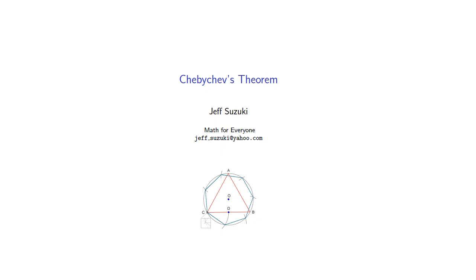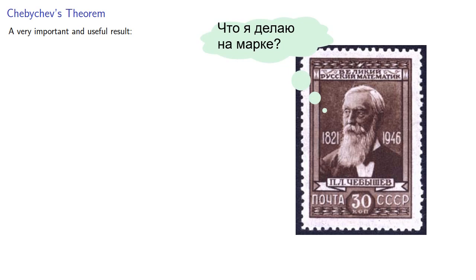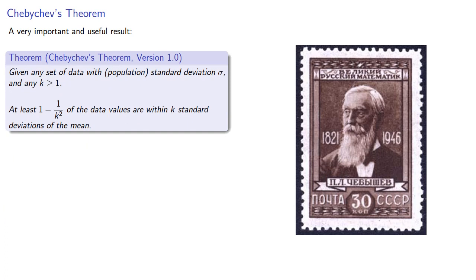A number of fundamental ideas in probability and statistics emerge from 19th and 20th century Russia. One of the most far-reaching is known as Chebyshev's theorem. Chebyshev was a 19th century Russian mathematician who discovered and proved a very important and useful result. Version 1.0: given any set of data with population standard deviation sigma and any value of k greater than or equal to 1, at least 1 minus 1 over k squared of the data values are within k standard deviations of the mean.